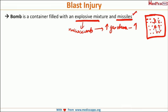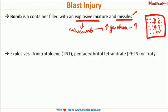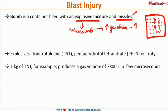When we talk about missiles, their main purpose is to increase the secondary injury, which we will see in further slides. Remember, a bomb is a container filled with explosive mixtures and missiles. The explosive mixture can be TNT (trinitrotoluene), PETN, or proto oil — there are various different kinds of explosive mixtures.